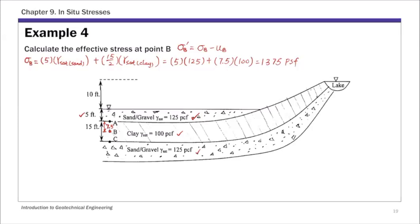The tricky part in the effective stress calculation at point B is finding the pore water pressure at B. Point B is at the middle of that impermeable clay layer. The way we find this pore water pressure at B is to find the pore water pressure at A and at C, and then do a linear interpolation.